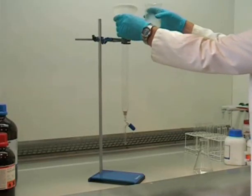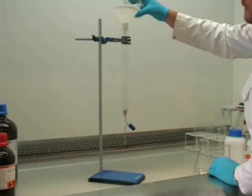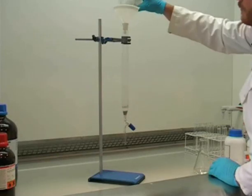Again, a funnel should be placed in the neck of the column to assist with pouring. You will need to occasionally swirl the beaker to ensure that the silica doesn't settle out in the bottom of the beaker.